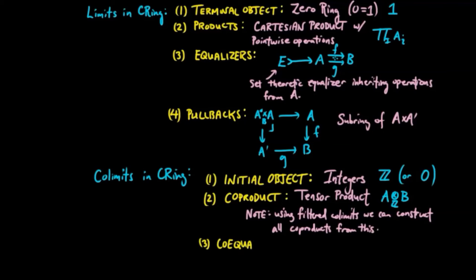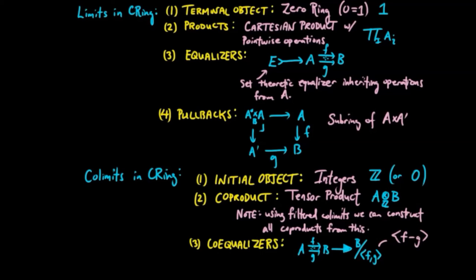For a co-equalizer of two ring morphisms, F and G, we can take the ideal formed by the difference and form the ring quotient.